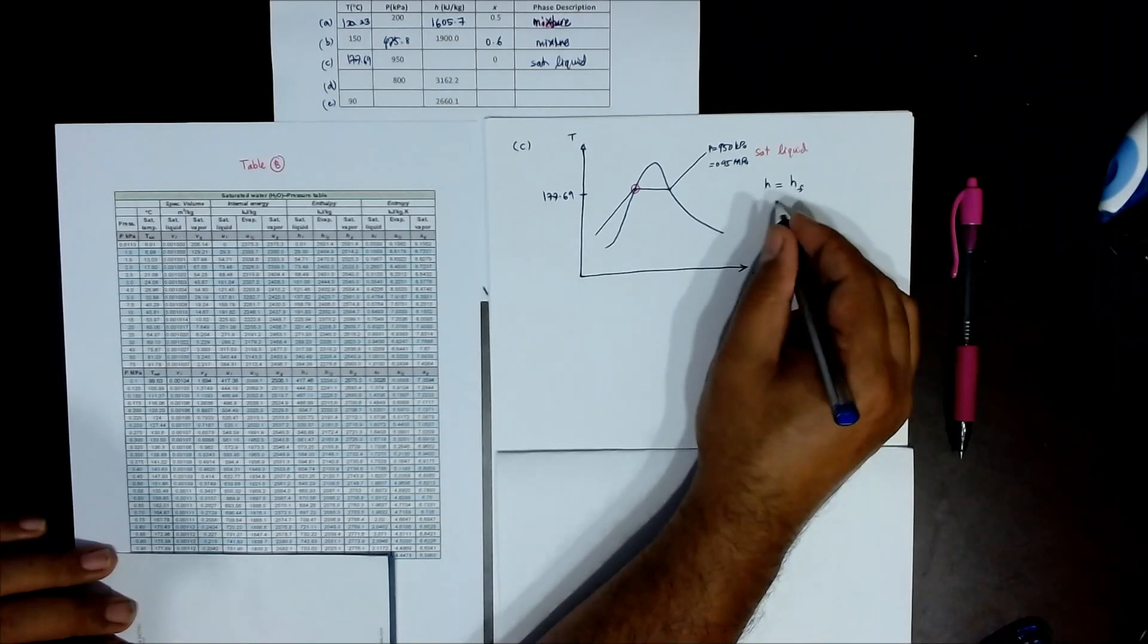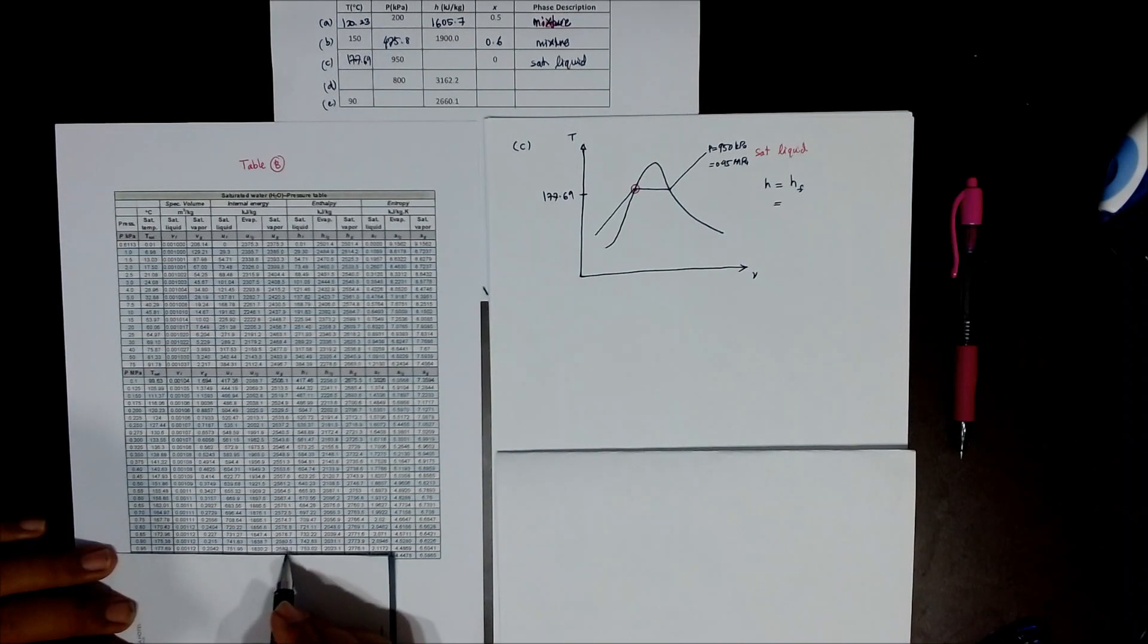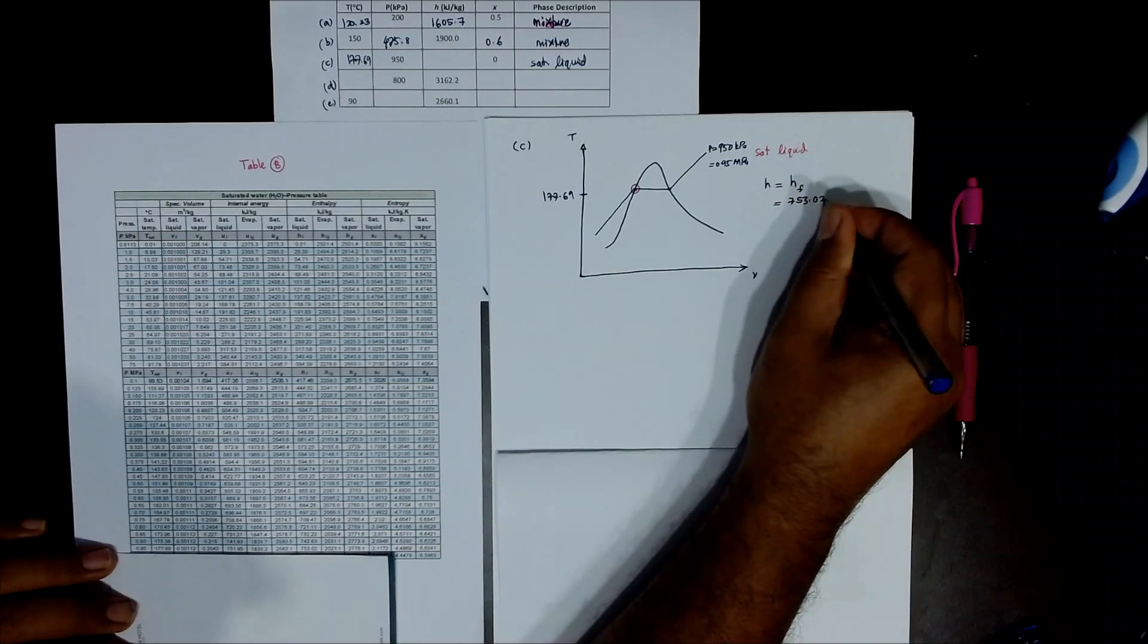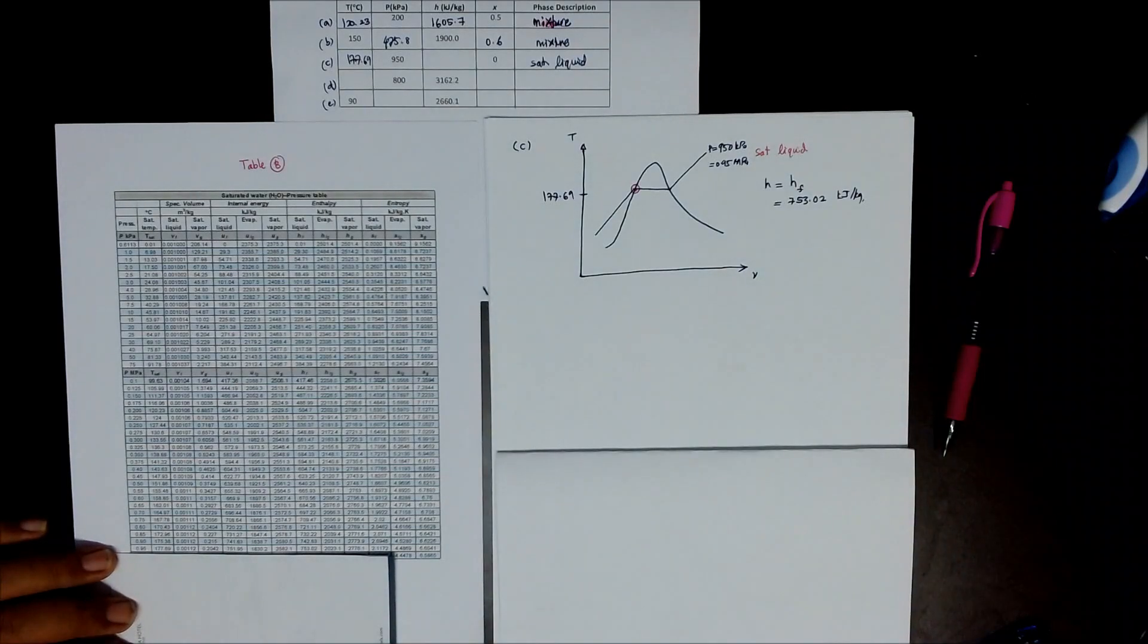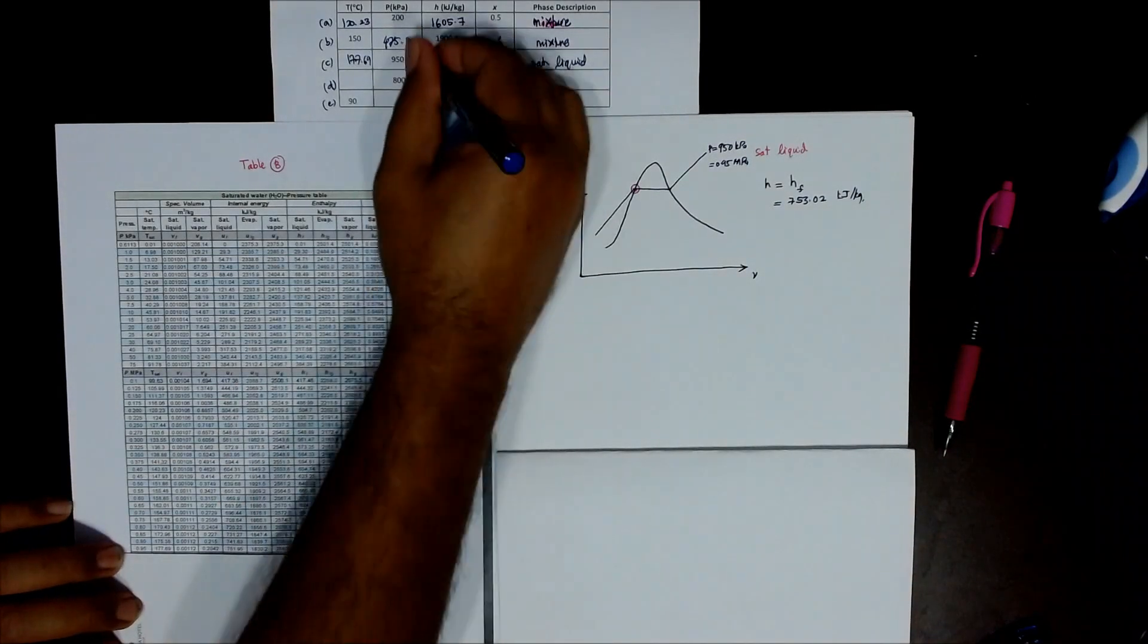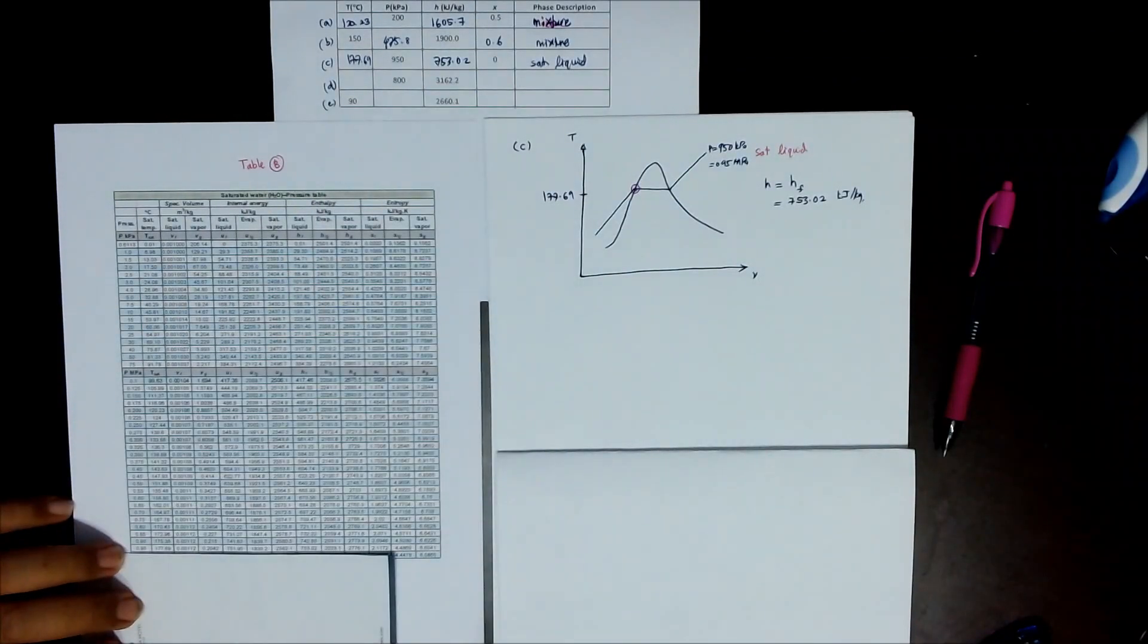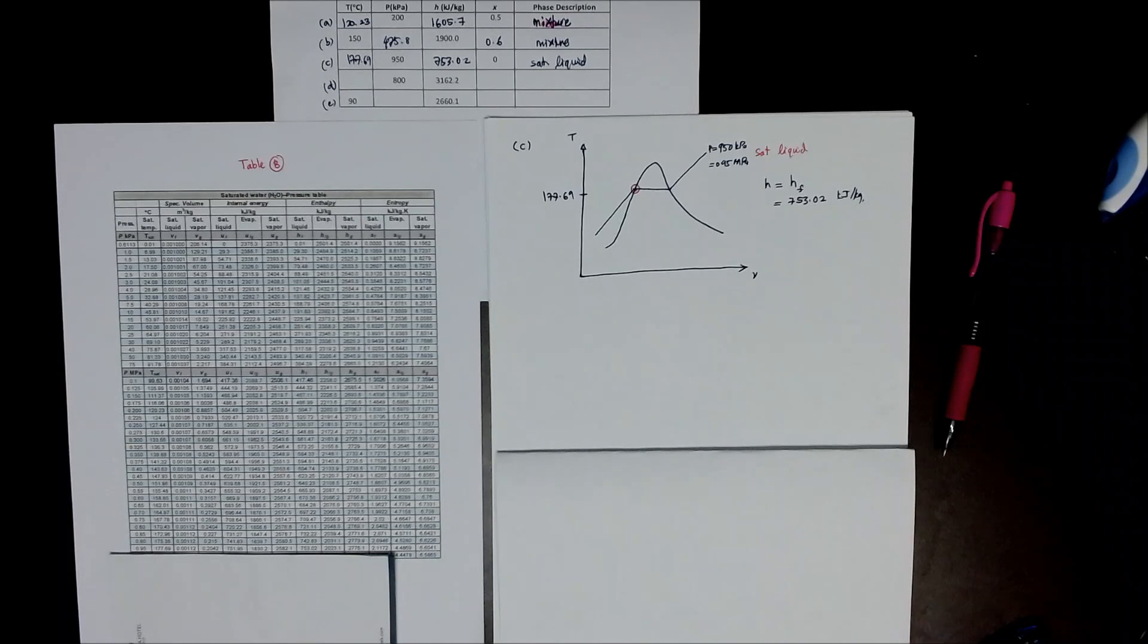So HF is what? At 0.95, HF is 753.02 kilojoule per kilogram. 753.02. Hopefully you can read my handwriting.